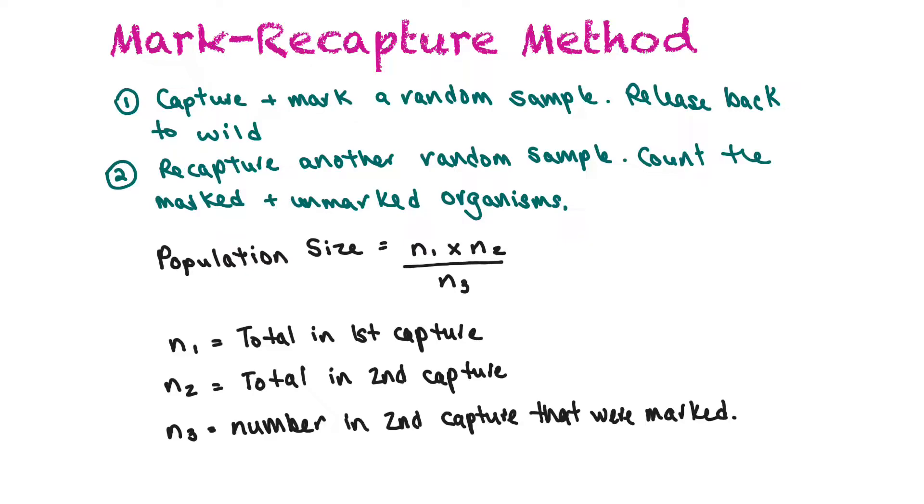You would then release that captured population back to the wild and you would wait a while. You would then recapture another random sample and you would count the organisms in that sample, counting the number that are marked and also the number that are unmarked in that sample size. So you would then use the following formula to calculate. Population size would be equal to the total number in the first capture multiplied by the total number in the second capture divided by the number in the second capture that were marked initially.